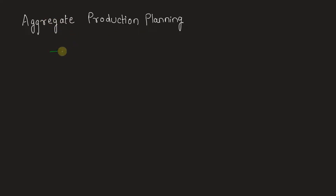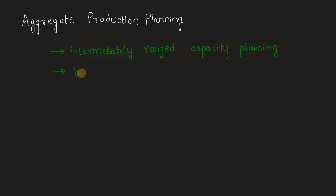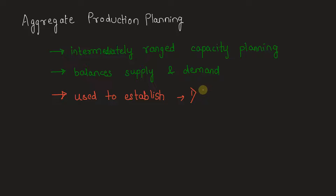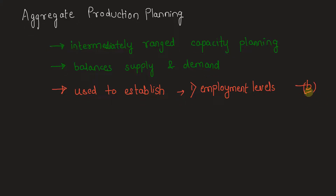Aggregate production planning is an intermediate-range capacity planning. It is used to balance supply and demand. Basically, it is used to establish the following things: number one, the employment levels, which is given in option B — employment levels are related to the amount of labor committed.